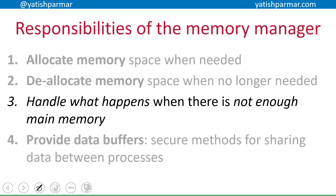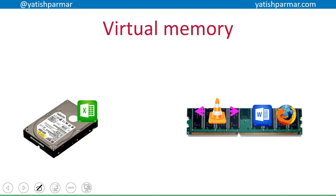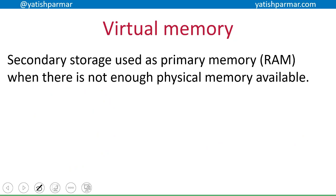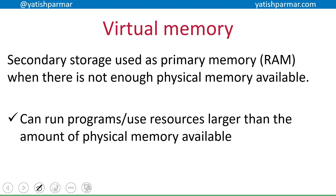Let's take an aside to talk about virtual memory, then return to pages. If we don't have enough physical memory and want to use Excel and Word at the same time while watching a video and browsing the web, we can move the data for Word — since we're not using it — into virtual memory on the secondary storage. That allows us to swap Excel into RAM. Virtual memory is where we use secondary storage as primary memory when we don't have enough physical memory available. The advantage is that we can run programs or use resources larger than the physical memory installed.